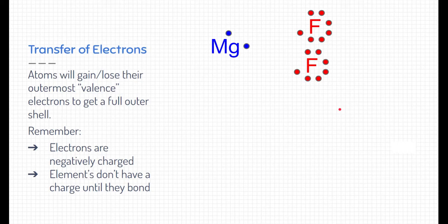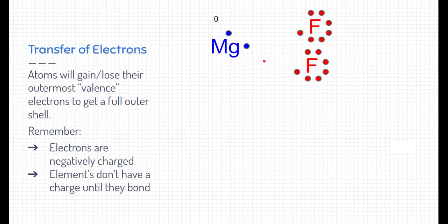Elements by themselves do not have a charge until they bond. That's a little confusing, because sometimes we say magnesium has a charge of positive two from the periodic table. But remember, magnesium does not have a charge until it bonds. Elemental magnesium with all its valence electrons does not have a charge. Similarly, these fluorines have not gone through a reaction — they're just elemental fluorines with seven valence electrons each, and they also do not have a charge.